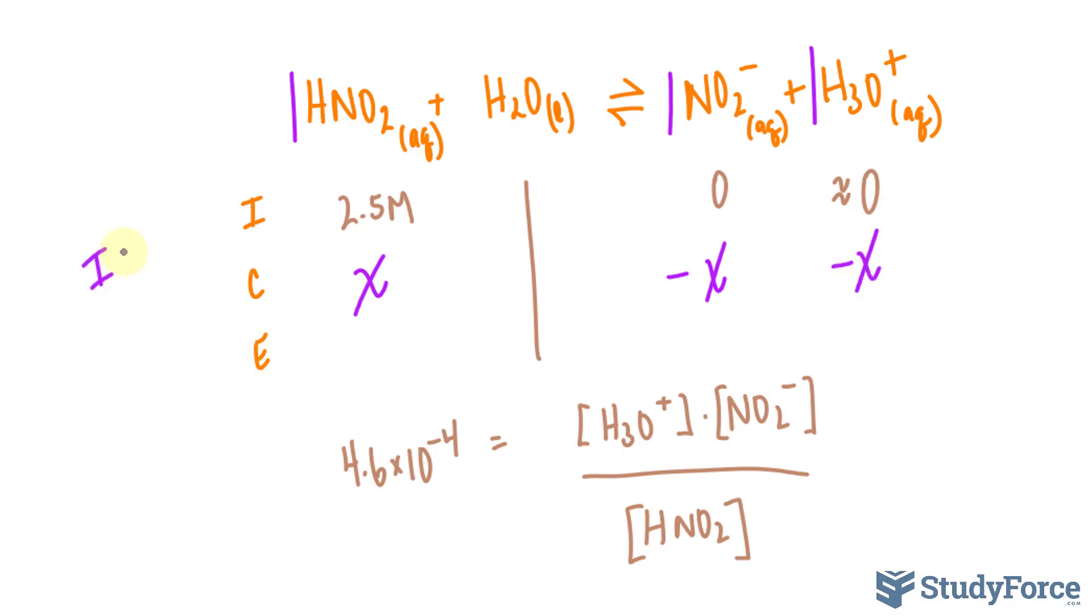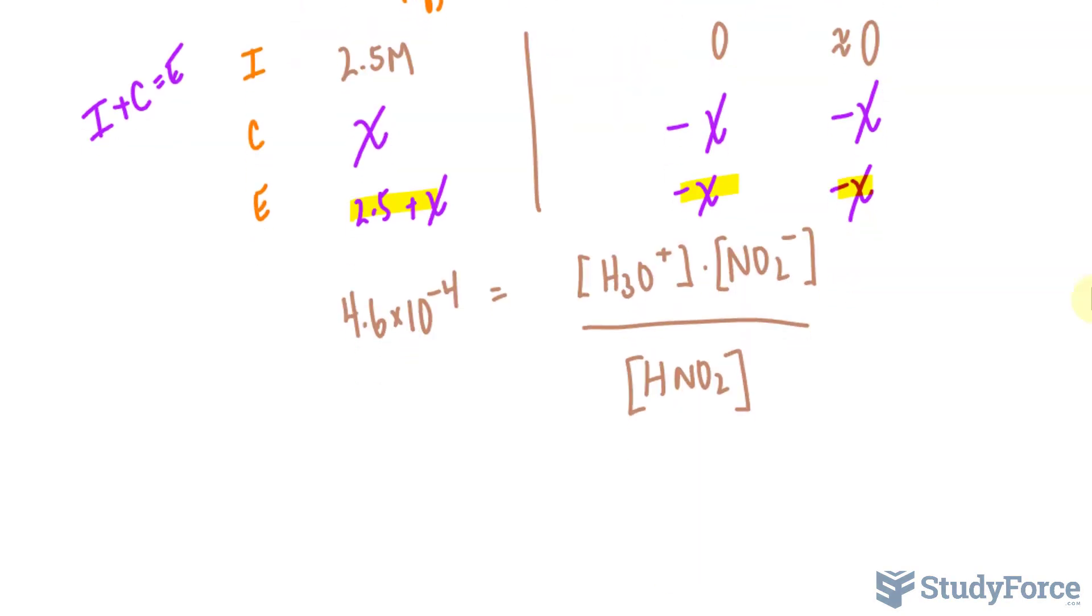And to find E, we take I plus C. That's always equal to your equilibrium. 2.5 plus X is 2.5 plus X. 0 plus negative X is negative X. And 0 plus negative X, again, is negative X. I'll substitute these expressions in where they belong in this equilibrium expression.